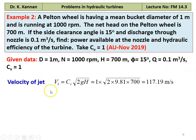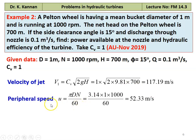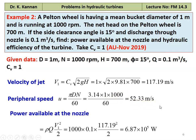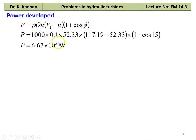Jet velocity V1 = Cv × √(2GH) = 1 × √(2 × 9.81 × 700) = 117.19 m/s. Peripheral speed U = πDN/60 = 3.14 × 1 × 1000 / 60 = 52.33 m/s. Power available at the nozzle = ρQ × V1²/2 = 1000 × 0.1 × 117.19² / 2 = 6.871 × 10⁵ W (approximately 687.1 kW).